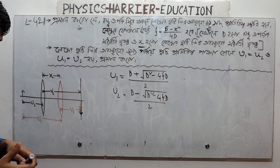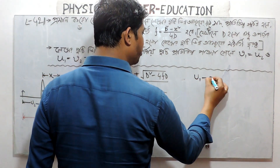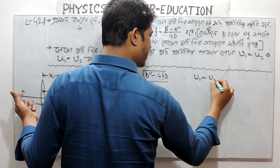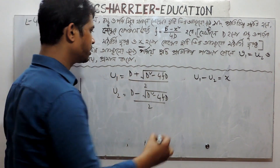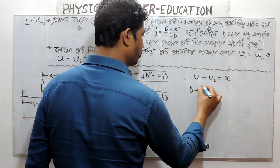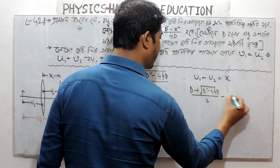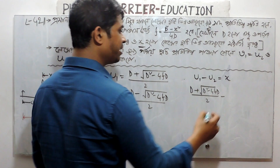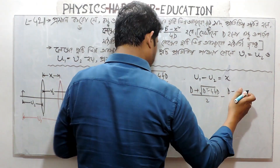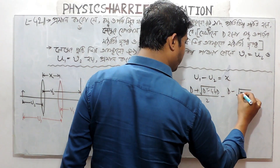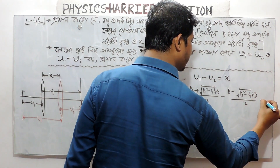There will be that object. u1 to the bottom, u2 bar, the x form, u1 to the bottom, that's u1 to the top: d plus root over d square minus 4fd by 2, minus, into theta, d minus root over d square minus 4fd by 2 equals to the bottom.